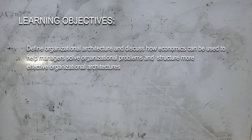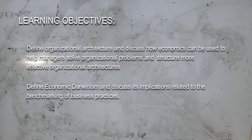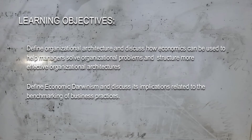Let's lay out our learning objectives for this video lecture. First, to define organizational architecture and discuss how economics can be used to help managers solve organizational problems and structure more effective organizational architecture. Second, to define economic Darwinism and discuss its implication related to the benchmarking of business practices.